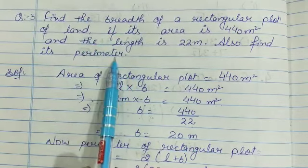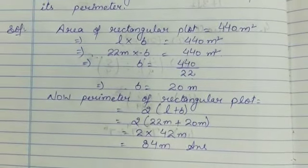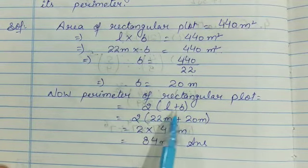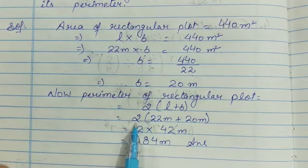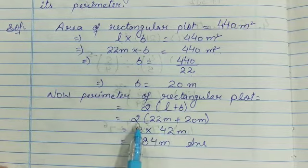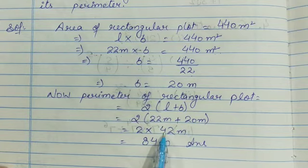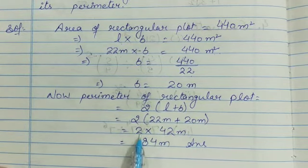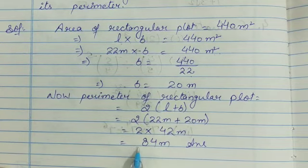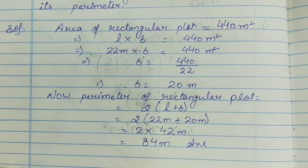Now perimeter of rectangular plot. This is 2 into L plus B, length plus breadth. 2 into L is 22 and breadth is 20. So 2 into 22 plus 20 equals 42. 2 multiplied by 42 equals 84 meters. This is the perimeter of the plot.